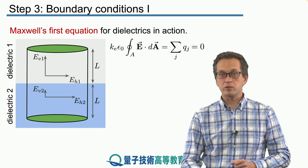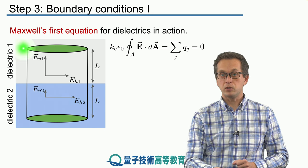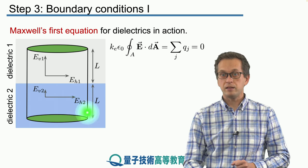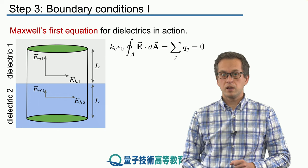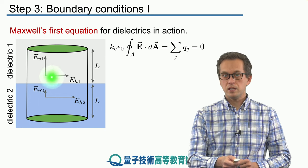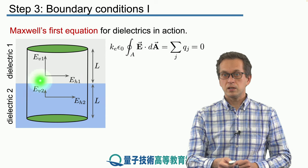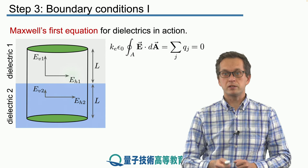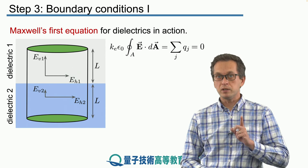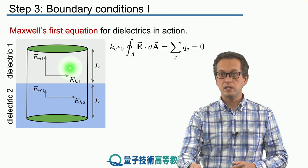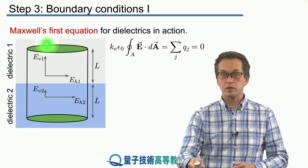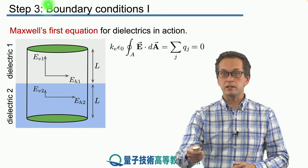We are going to consider the flux through the top surface first and the bottom surface. You notice that eH1 is parallel to the surface, meaning it is perpendicular to the vector dA or this surface because the dA is pointing up like this.